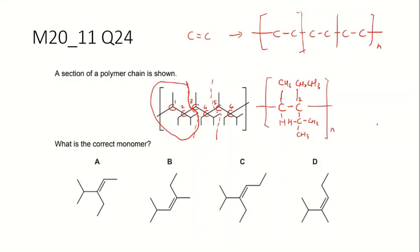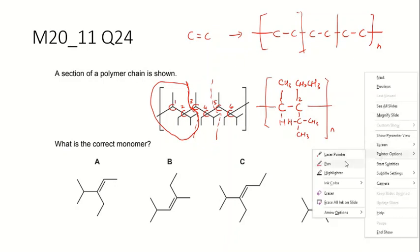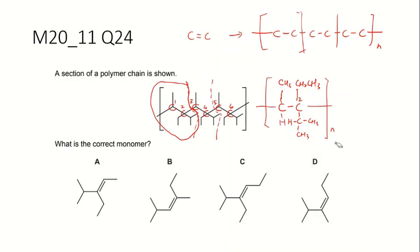So to get monomer you know that you have to give back the pi bond to the two carbons. Right, so I'm going to erase this one, the square bracket.